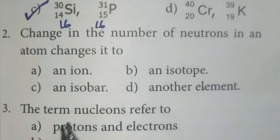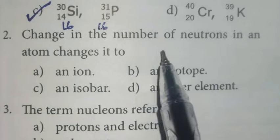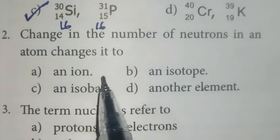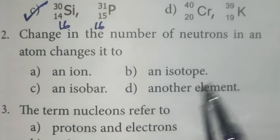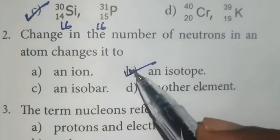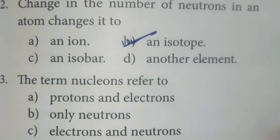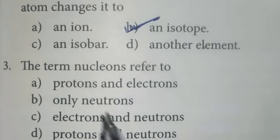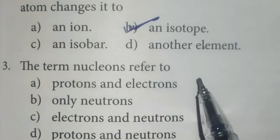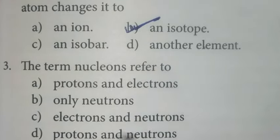Second one: change in the number of neutrons in an atom changes it to an isotope. Option B is the right answer. Third one: the term nucleons refer to protons and neutrons. Option D is the right answer.